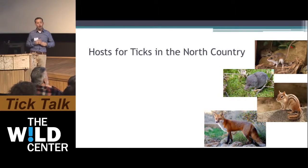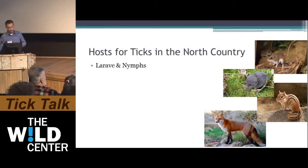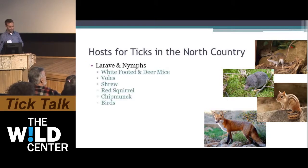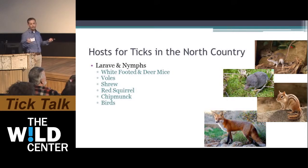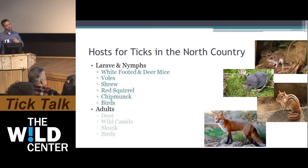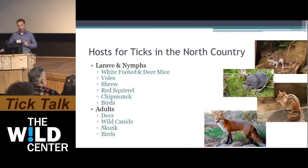What kind of hosts do ticks use here in the North Country? A lot of different animals. Larvae and nymphs feed on smaller animals: the white-footed and deer mouse (Peromyscus species), voles, shrews, red squirrels, chipmunks, and birds. Adults feed on larger animals like deer, wild canids, skunks, and birds.